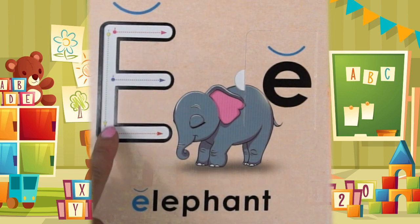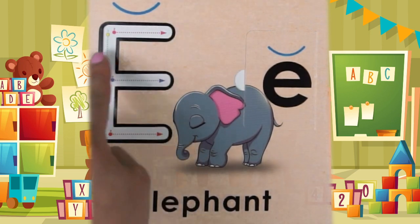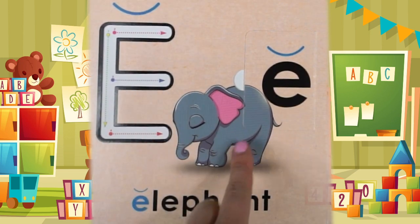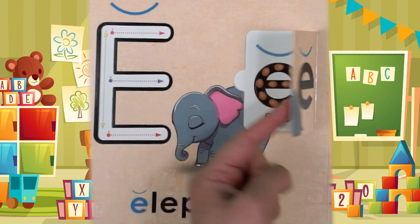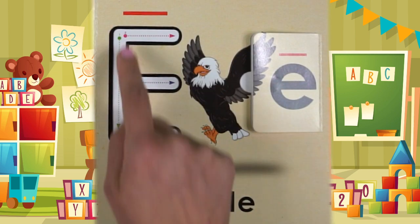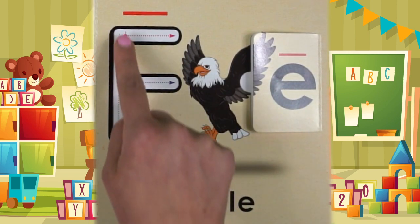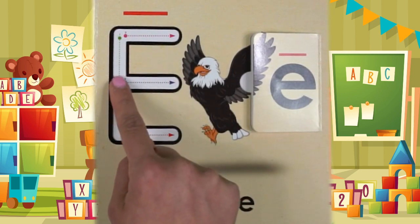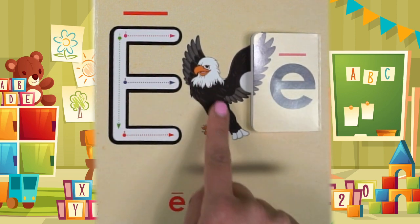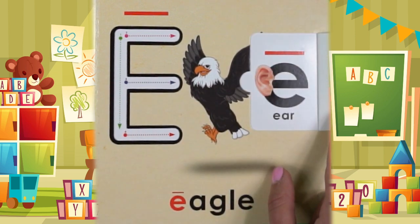Its name is E, its sound is E. Elephant starts with E and egg starts with E. Its name is E, its other sound is E. Eagle starts with E and ear starts with E.